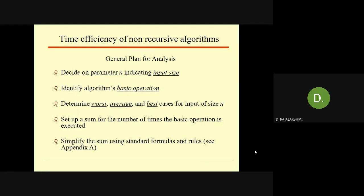Step 1: decide on a parameter indicating the input size. Step 2: identify the algorithm's basic operation — the most time-consuming operation present in the algorithm. Then check whether the number of times the basic operation is executed depends only on the size of the input, or also on some additional property. If it depends on an additional property, we have to do all three cases of analysis: worst case, average case, and best case. Otherwise, it is not needed.